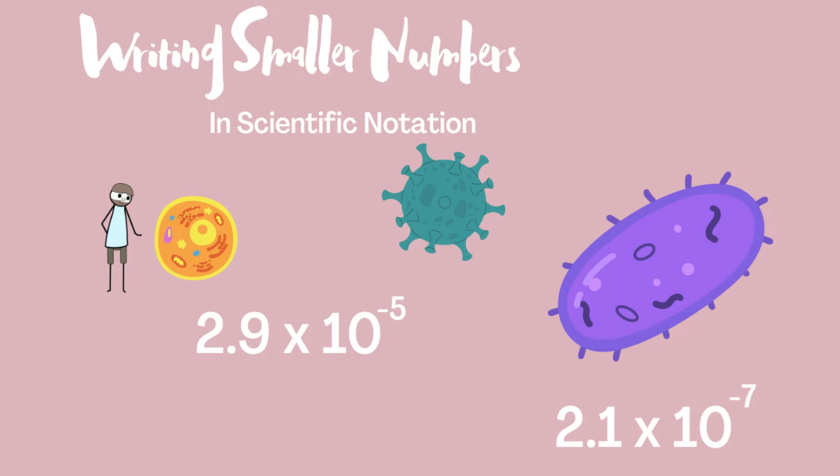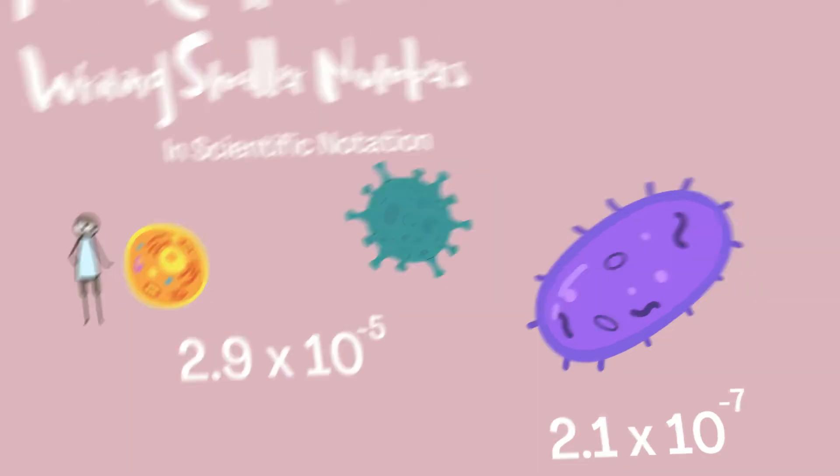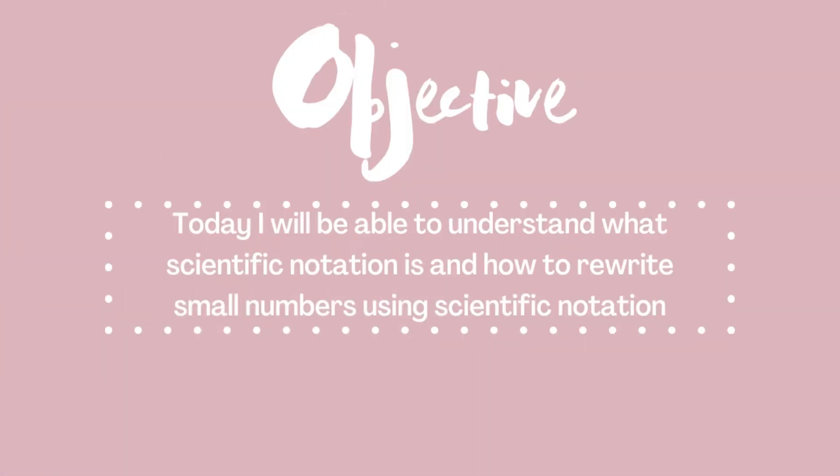We're going to be doing the opposite of what we did last lesson. Our objective today: I will be able to understand what scientific notation is and how to rewrite small numbers using scientific notation.